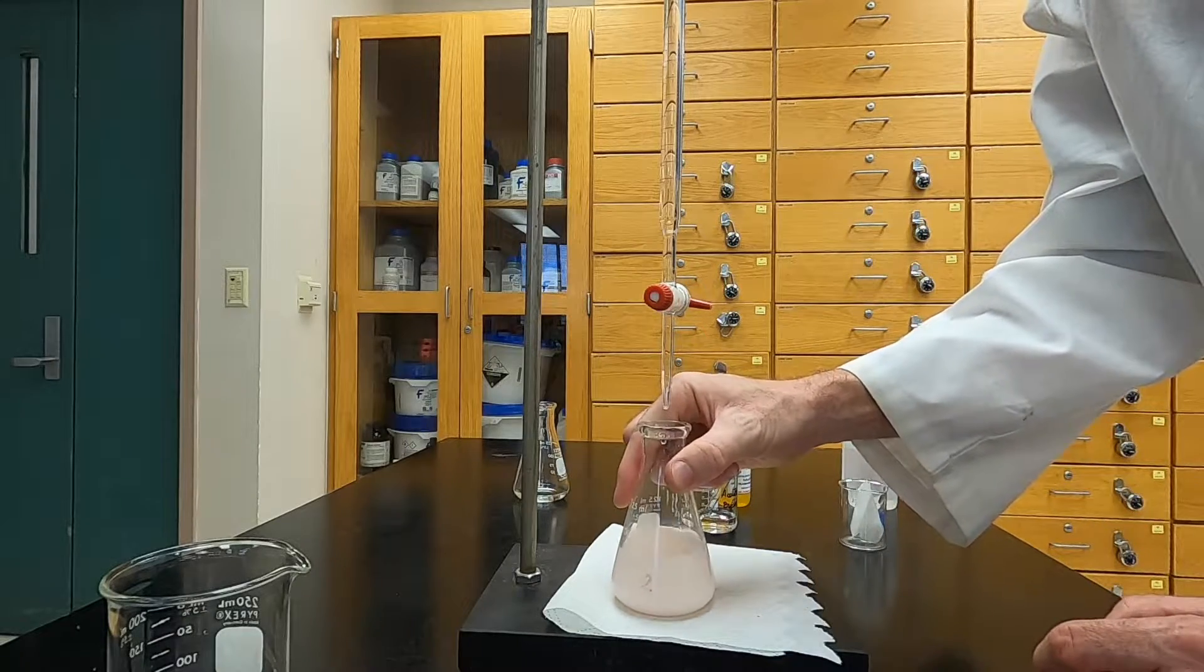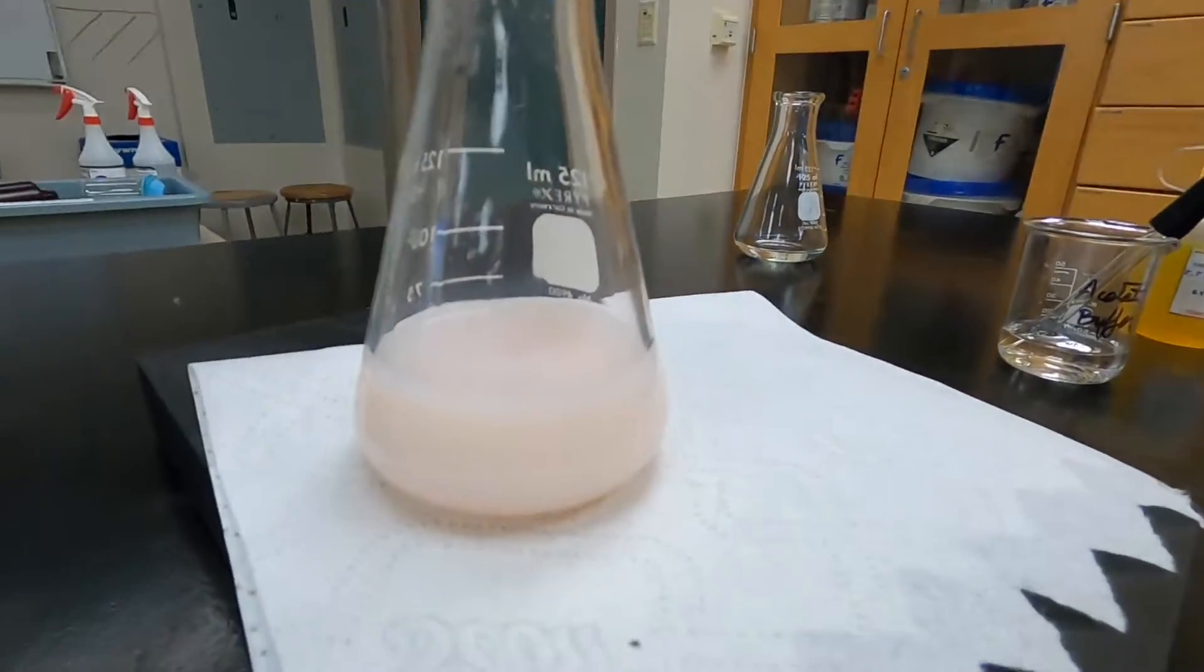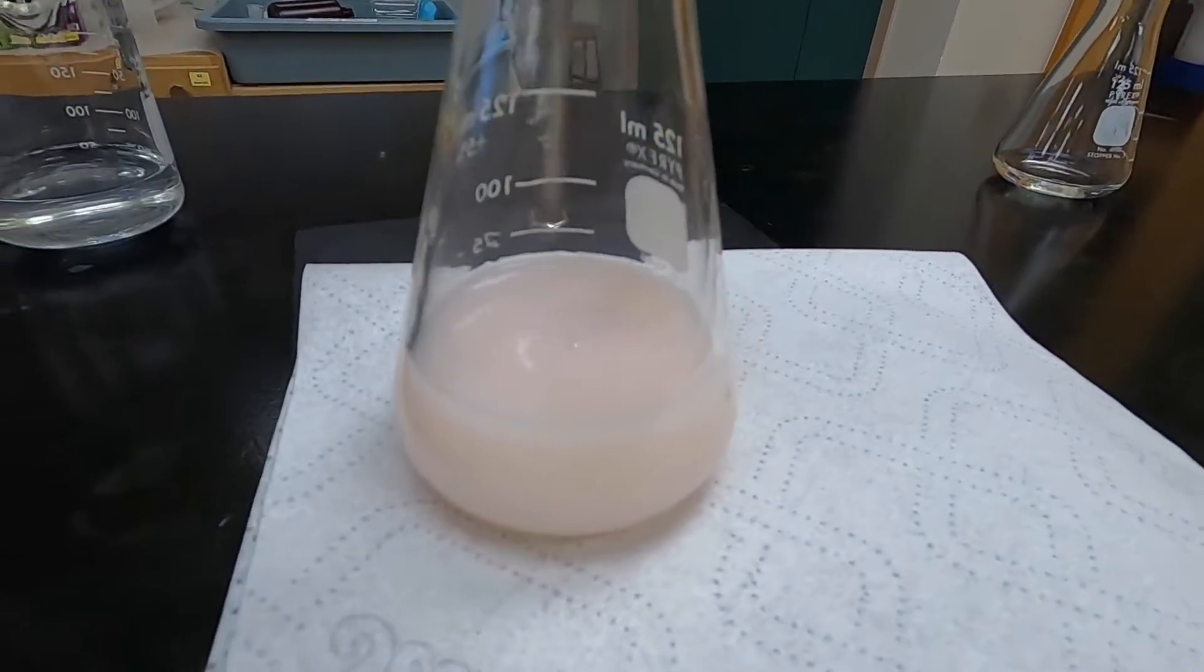You may find that keeping your titration flask on a white piece of paper towel or white piece of paper makes it a little easier to distinguish the exact color of your endpoint.